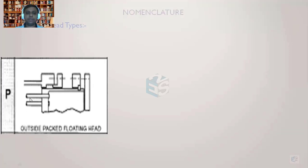When there is a high temperature difference, the tubes expand and move to the right side. Since the tubes are attached to the tube sheet, and the tube sheet is integral with the channel shell, this entire assembly moves. The channel shell is also attached to a blind cover, which is free — it can be removed and tightened with bolting.